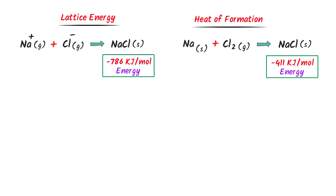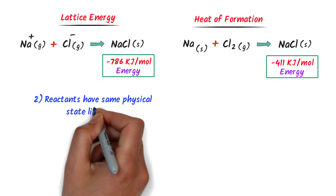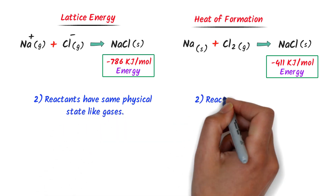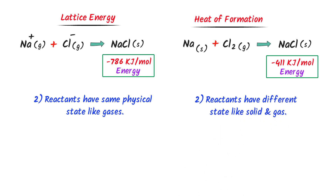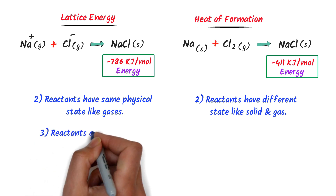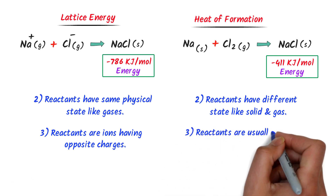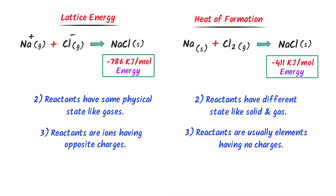This energy is known as heat of formation or enthalpy of formation. Secondly, in case of lattice energy both reactants have the same physical state, while in case of heat of formation the reactants have different physical states. Thirdly, in case of lattice energy the reactants are ions having opposite charge, while in case of heat of formation the reactants are usually elements having no charge. Thus, these are the main differences between lattice energy and heat of formation.